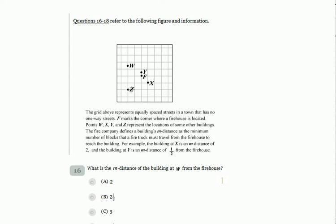We have marked the corner where a firehouse is located. Points W, X, Y, and Z represent the locations of some other buildings. The fire company defines the building's M distance as the minimum number of blocks that a firetruck must travel from the firehouse to reach the building. For example, the building at X is at M distance of 2. Let's write it: X has M distance of 2.